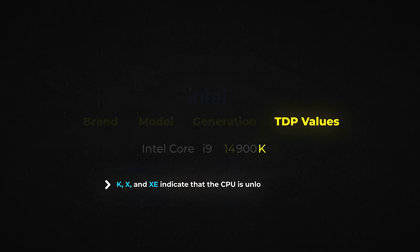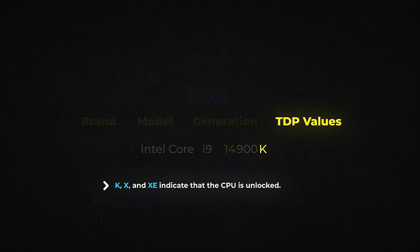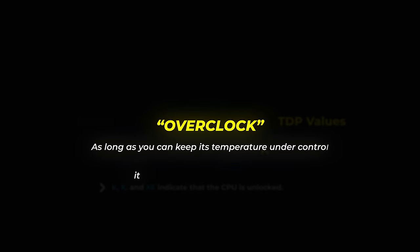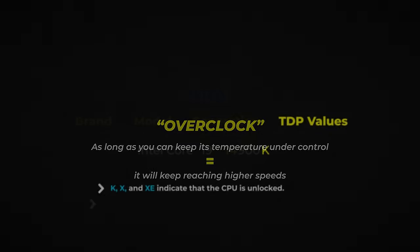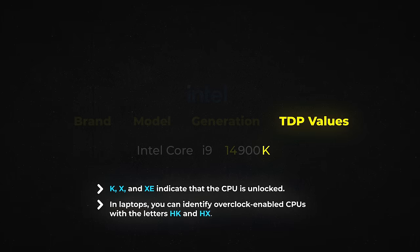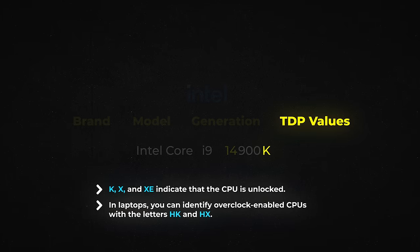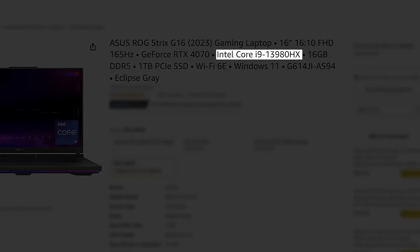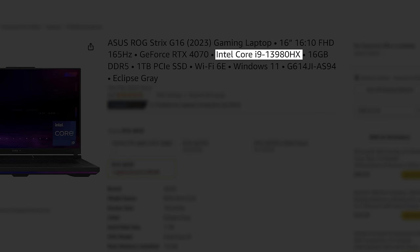K, X, and XE indicate that the CPU is unlocked and can operate at higher clock speeds than the advertised maximum limit. This capability is known as overclocking. As long as you can keep its temperature under control, it will keep reaching higher speeds. In laptops, you can identify overclock-enabled CPUs with the letters HK and HX. While they can't offer the clock speeds of a desktop K line, HK and HX CPUs are also able to overclock.